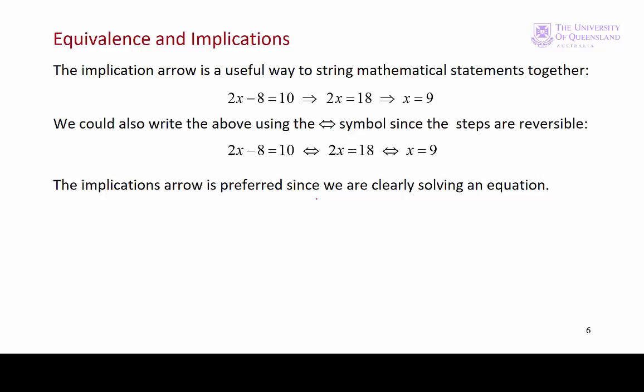For example, we have 2x - 8 = 10. This implies that 2x = 18, so we add 8 to both sides. And the next step, we divide both sides by 2. So 2x = 18 implies x = 9, and we have a solution. We could have used equivalence arrows here, because we've just used those first three operations that give rise to equivalent equations. But usually when we're solving equations, we use the implications arrow.